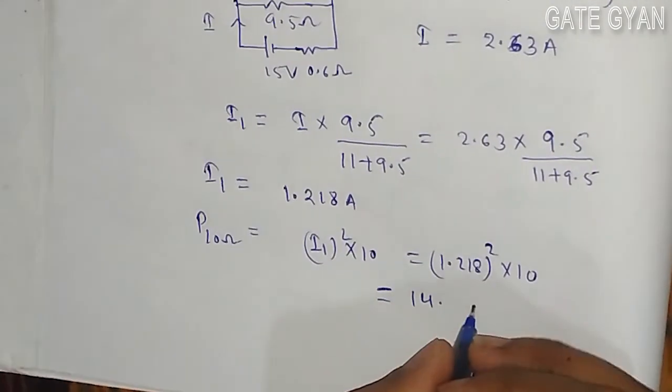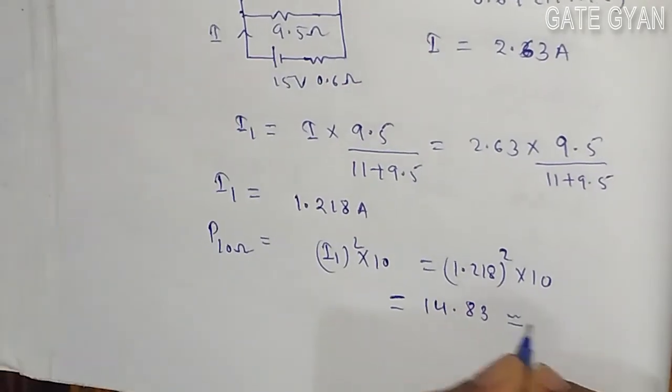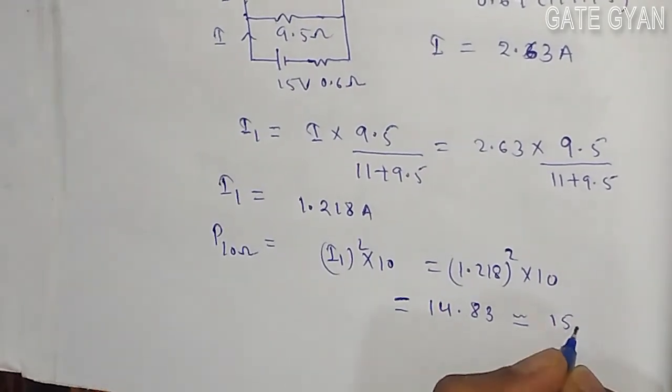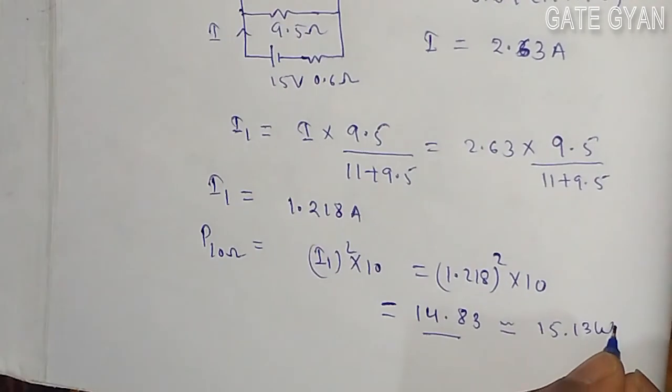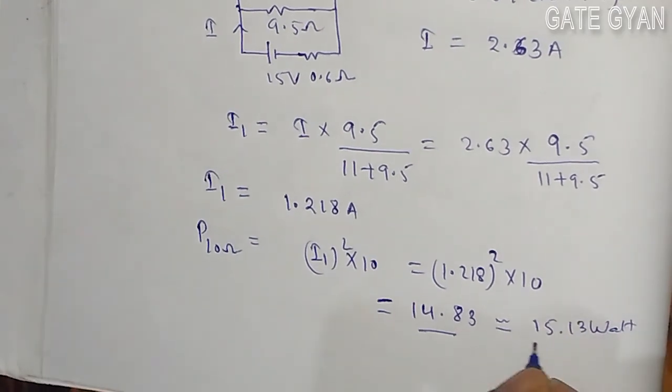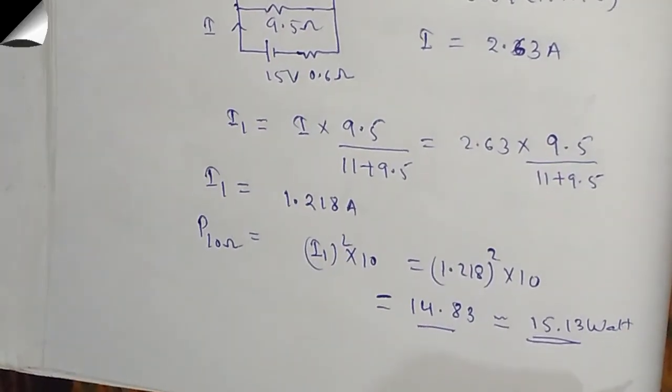Which is approximately equal to option 15.13, as 14.13 was not given in the option. So the nearest possible answer is going to be 15.13. Thank you.